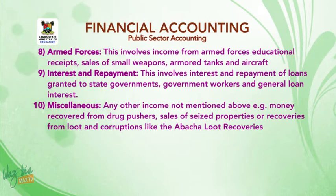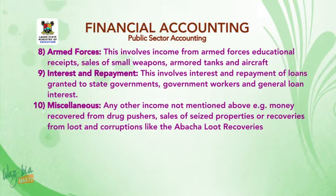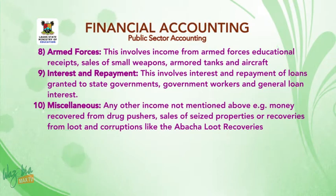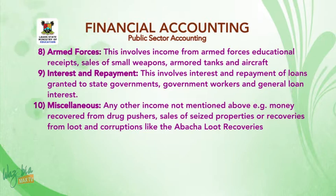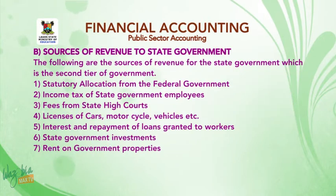Seven, rent on government properties — income from rent on government quarters, offices, vehicles, and land fees. Eight, armed forces — income from armed forces educational receipts, and sales of small weapons, ammunition, tanks, and aircraft. Nine, interest and repayment — this involves interest and repayment of loans granted to state governments, government workers, and general loan interest. Ten, miscellaneous — other income not mentioned above, such as money recovered from drug pushers, sales of seized properties, and recoveries from looting and corruption.